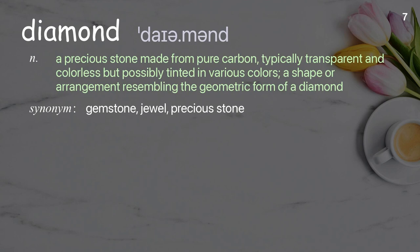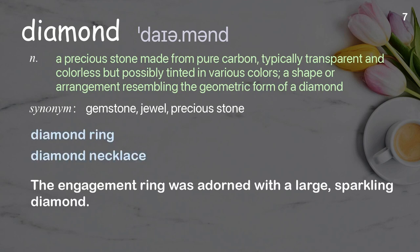Diamond: a precious stone made from pure carbon, typically transparent and colorless, but possibly tinted in various colors; also a shape or arrangement resembling the geometric form of a diamond. Examples: diamond ring, diamond necklace. The engagement ring was adorned with a large, sparkling diamond.